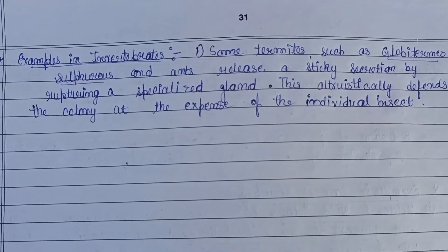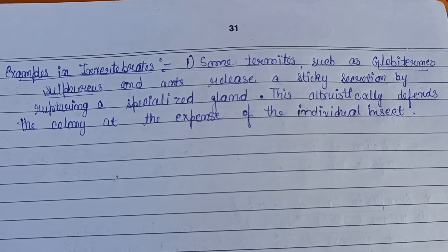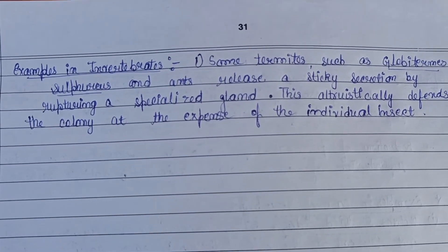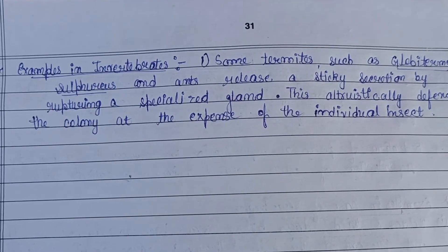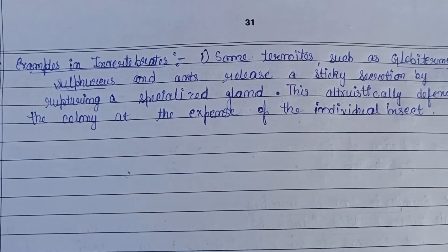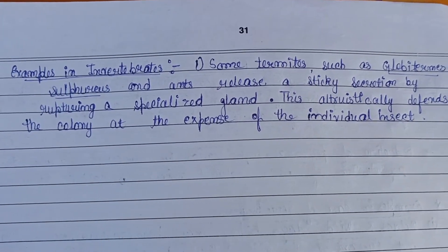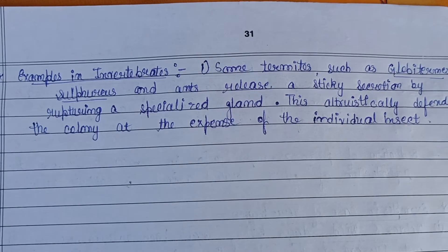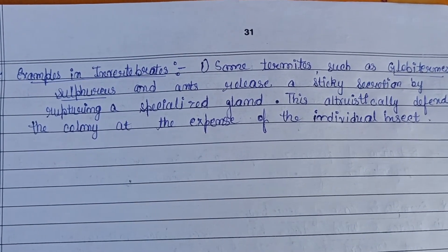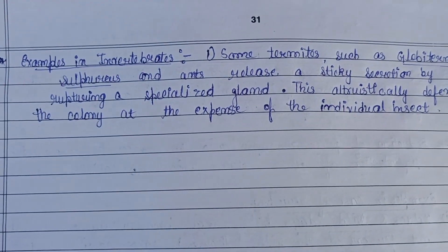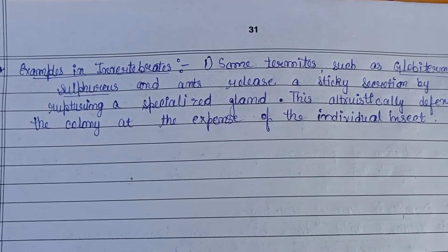In case of invertebrates, some termites like Globitermes sulphureus and ants release a sticky secretion from a specialized gland which ruptures. This secretion is released altruistically to defend the colony, but at the expense of the individual insect, which can be harmed or killed in the process.